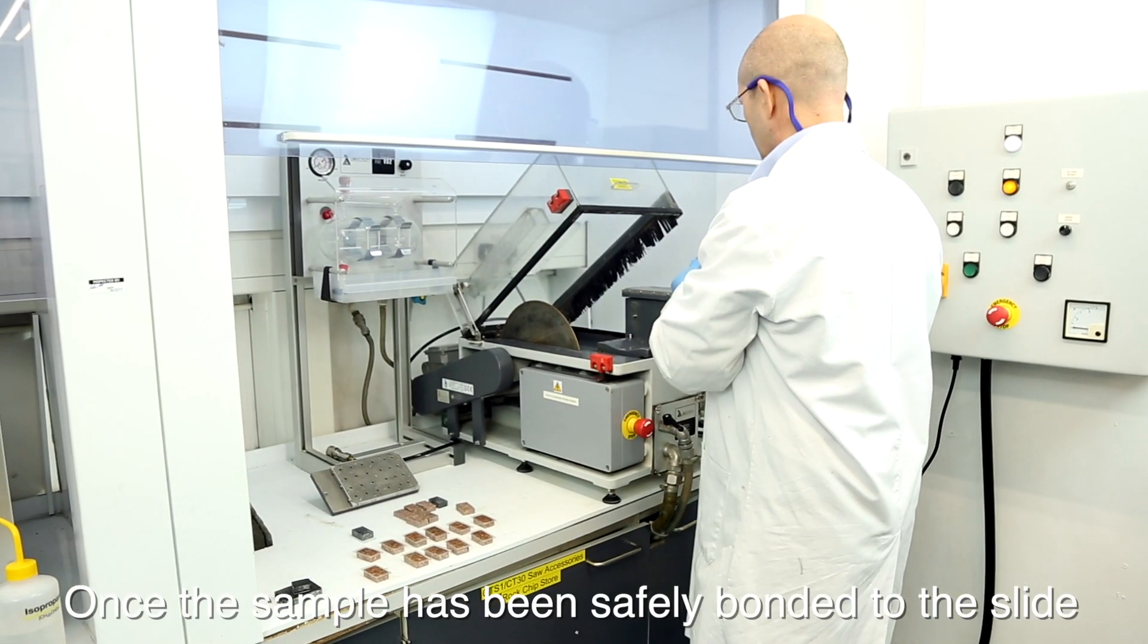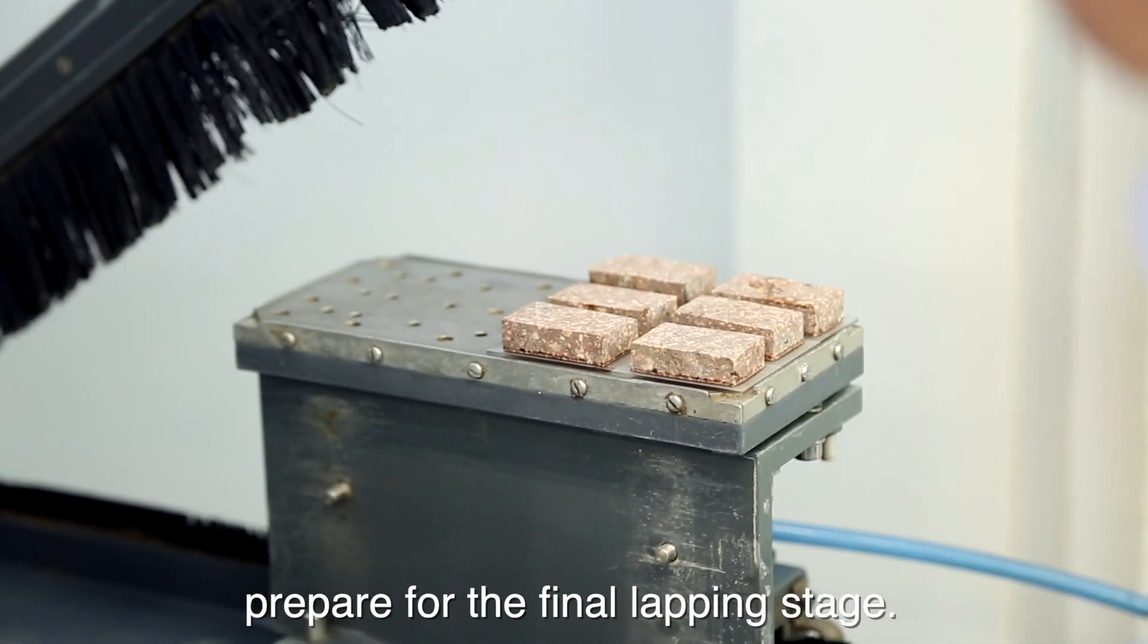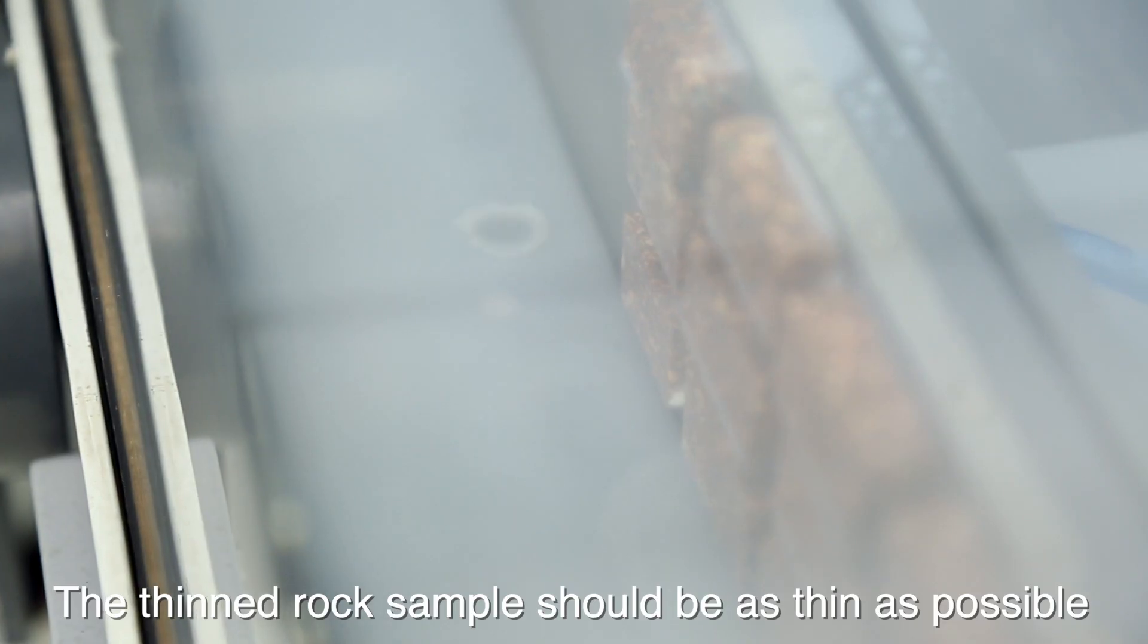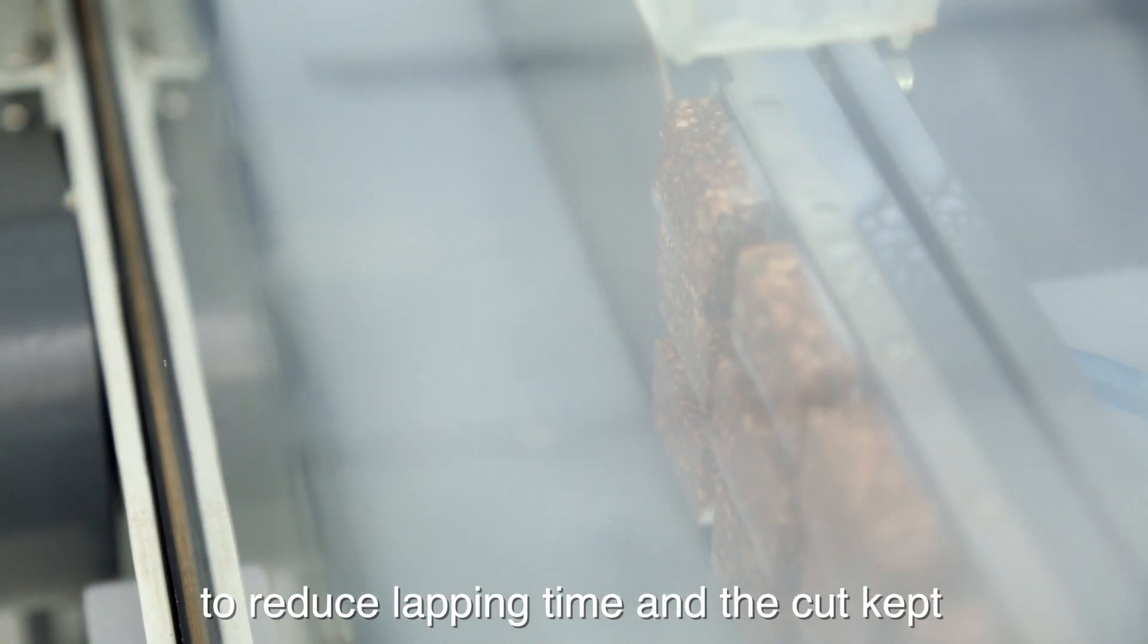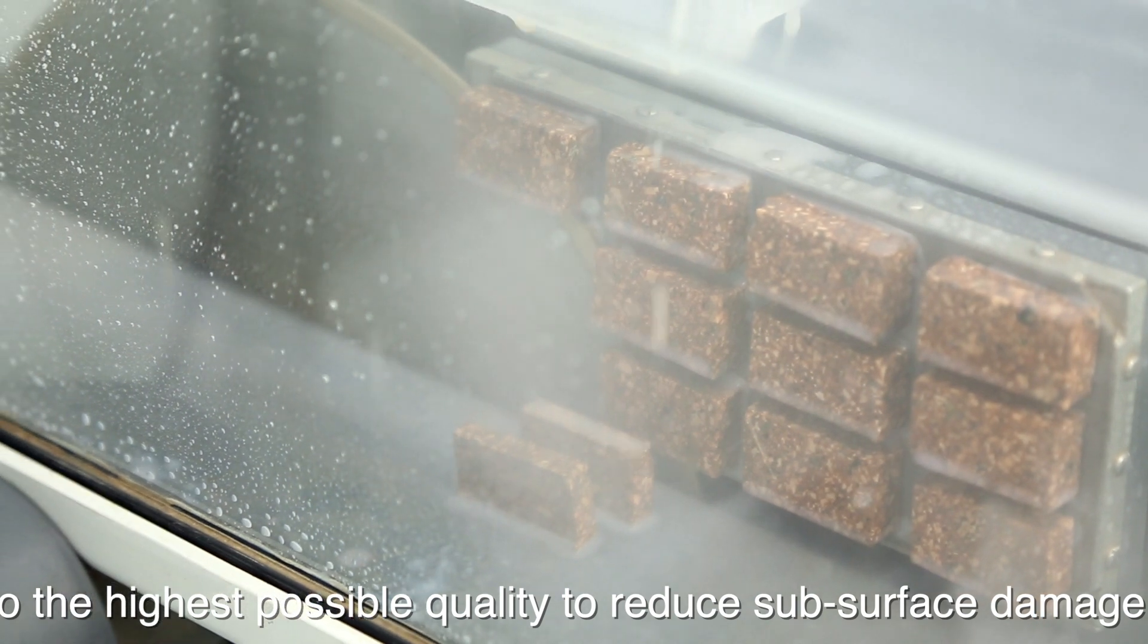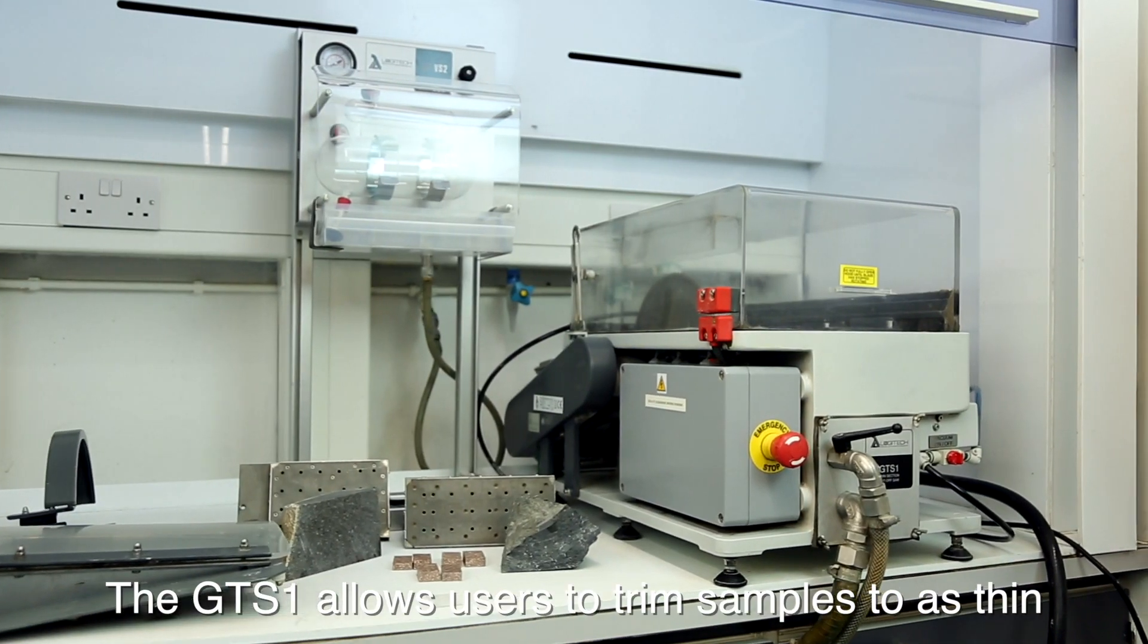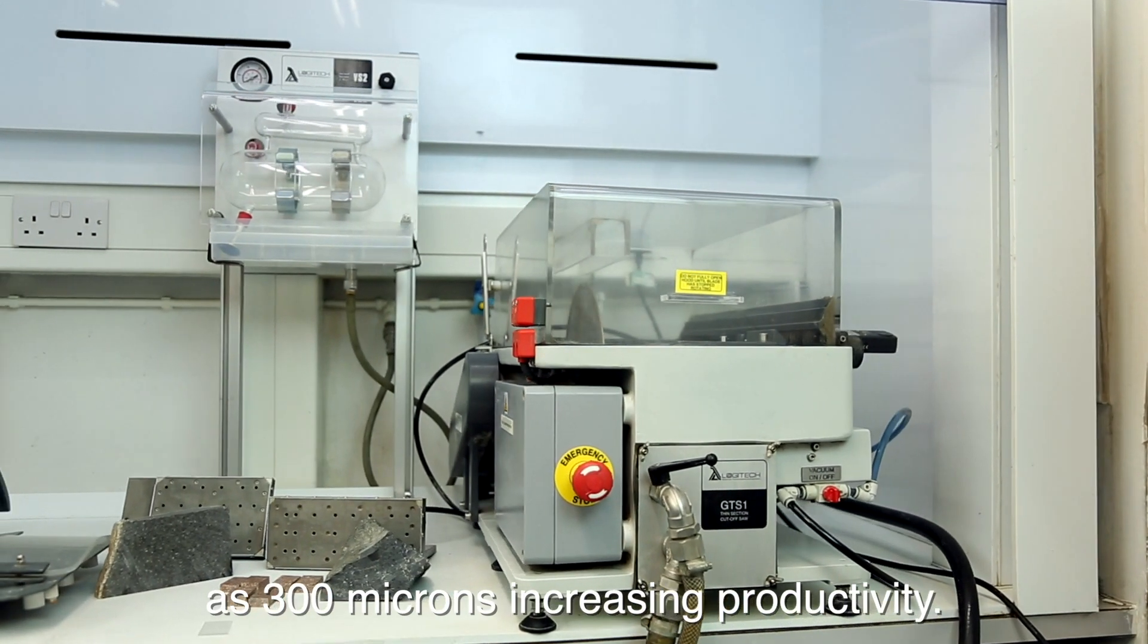Once the sample has been safely bonded to the slide, the excess sample material must be trimmed to prepare for the final lapping stage. The thinned rock samples should be as thin as possible to reduce lapping time and the cut kept to the highest possible quality to reduce subsurface damage. The GTS-1 allows users to trim samples to as thin as 300 microns increasing productivity.